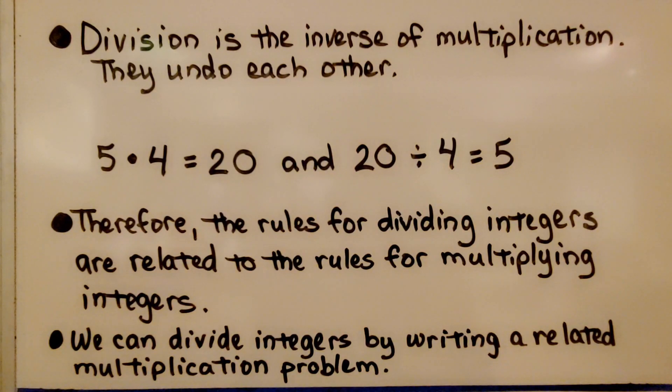Division is the inverse of multiplication. They undo each other. 5 times 4 is equal to 20, and 20 divided by 4 is equal to 5.